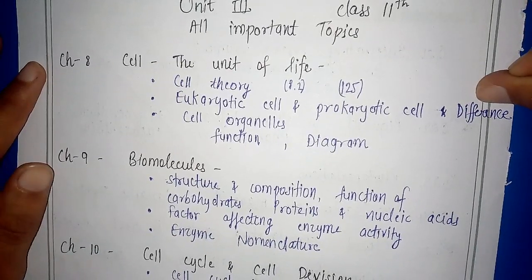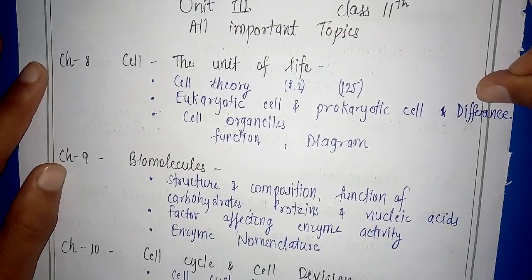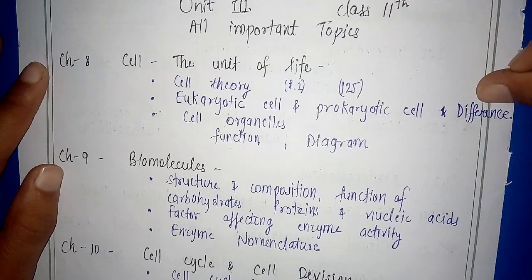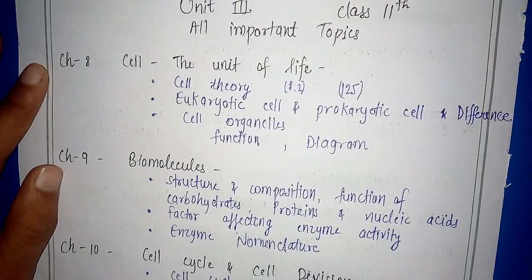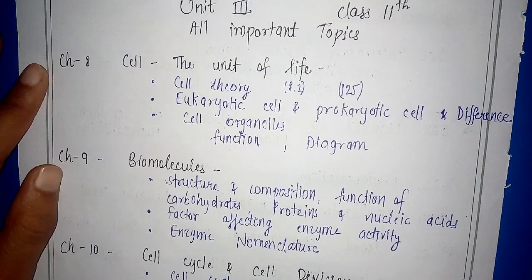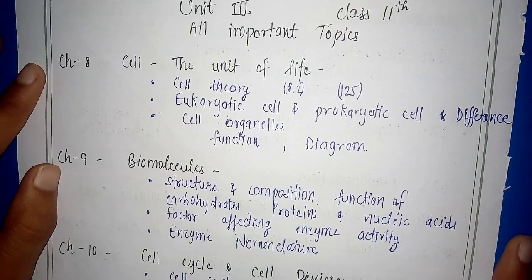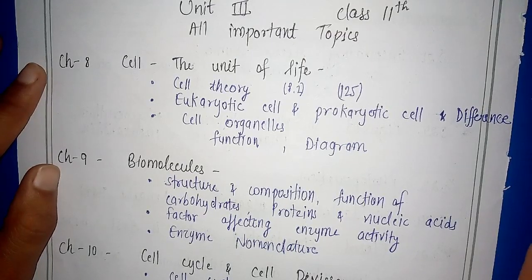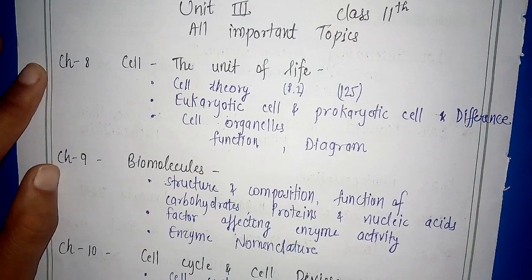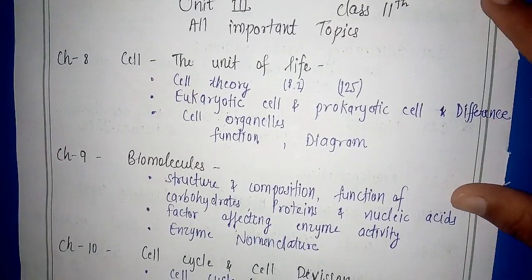The next topic is cell organelles. These are 1 mark, 2 marks, and 3 marks questions. If it comes as 3 marks, then tell the diagram, function, and cell organelles. If it comes as 2 marks, then you have to tell the function. And if it comes as 1 mark, then tell the function. You need to see all the cell organelles.